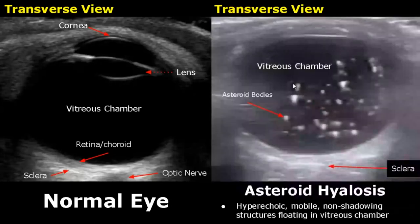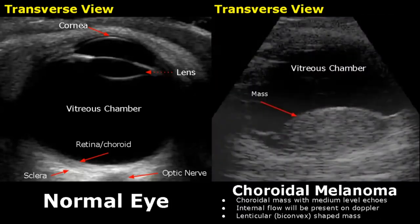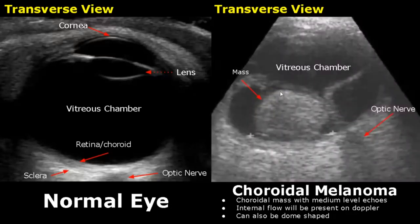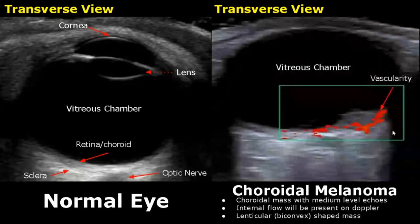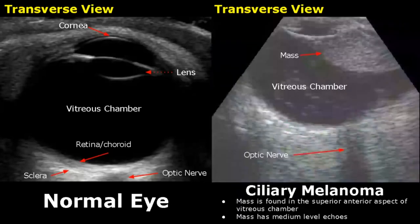In asteroid hyalosis, small hyperechoic mobile non-shadowing structures will be seen floating in the vitreous chamber. Choroidal melanoma is an intraocular tumor — we will see a choroidal mass with medium-level echoes. On color Doppler we find internal vascularity. The most common shape is lenticular or biconvex; it can also be dome-shaped. Choroidal detachment can also be seen in this image. Ciliary melanoma is another intraocular tumor found in the upper anterior aspect of the vitreous chamber, also with medium-level echoes.